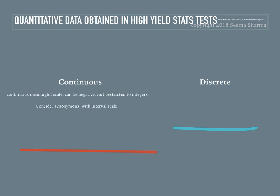Just to remind you, continuous data is that which is on a meaningful scale, can be negative, and is not restricted to integers. Examples are 8.8 feet, 2.5 centimeters, 1 centimeter, negative 5 degrees Celsius. Continuous data can be considered synonymous with interval scale for the purpose of learning these statistical tests for the boards.